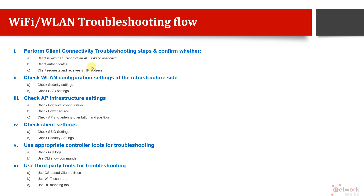After you've confirmed everything on the client side — you are getting an IP address, you are getting authentication, and all of that — but you still have problems, then the second step is to check the wireless LAN configuration settings at the infrastructure side, not on the client side. First check the client side, then check the infrastructure side.